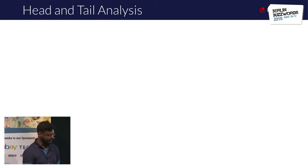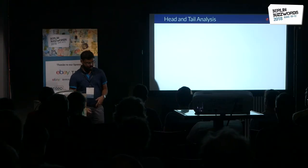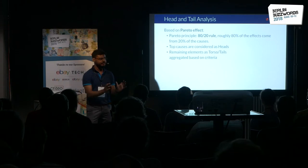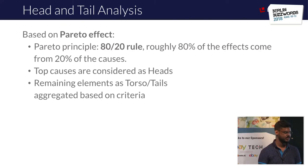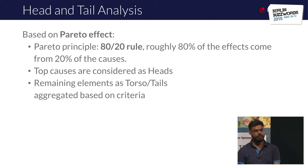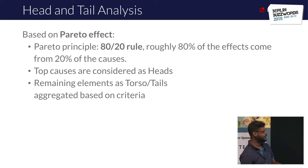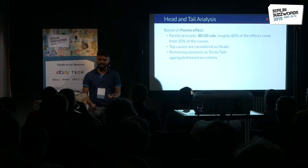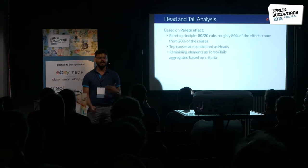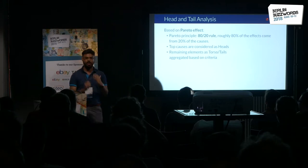Before jumping into how we can utilize this, let's first understand what head-tail analysis is. It is based on the Pareto principle — the 80/20 rule — which states that 80% of the effects come from 20% of the causes. For example, in an organization, a small number of salesmen generate a greater chunk of revenue than the others. These high-performing salesmen are the top causes — the 20% — termed as 'heads,' while the rest are 'tails,' aggregated based on criteria like region, experience, or relevant metric.